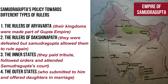Secondly, the rulers of Dakshinapath surrendered to Samudra Gupta after being defeated, and he then allowed them to rule again. Perhaps because of the distance, the kingdoms of Dakshinapath were not made part of the main empire of Samudra Gupta.